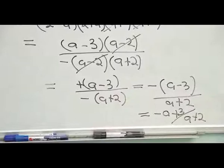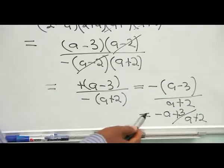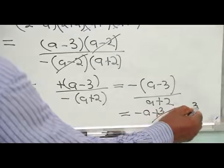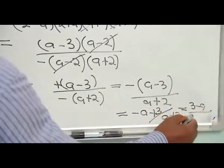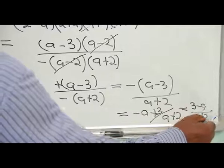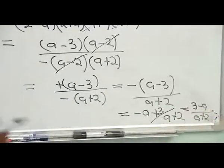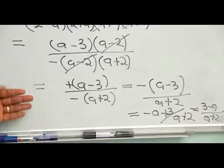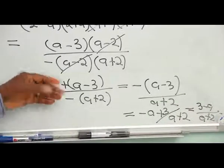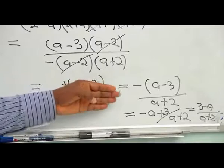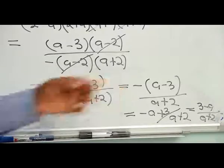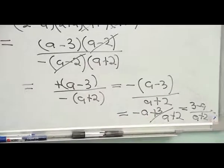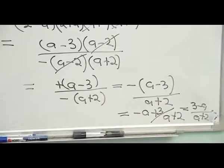We can also write this as (3 minus A) all over (A plus 2). So there are variations of expressing the answer: minus(A minus 3)/(A plus 2), or (3 minus A)/(A plus 2). In most exams, you should be technical enough to recognize these variations, because an examiner can present any of them as the correct option.